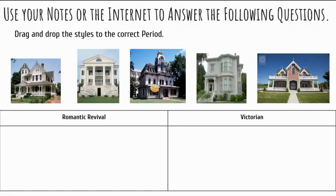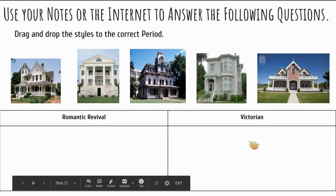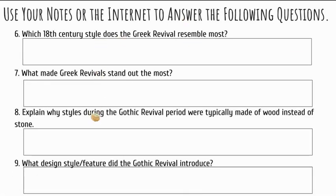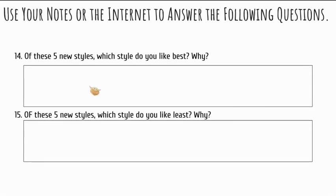For your assignment, just like you've seen before, use your notes and the internet to answer the following questions. You can drag and drop — it's an example of each of the five styles we just went over, and you're going to tell me whether it goes to the Romantic Revival or Victorian period, then answer the questions like you normally have. When you're done, make sure you hit submit. With Google Slides, you have to exit out of the slide itself and then go to the assignments page on Classroom to hit submit. If you can't remember how or think it won't save, you can email me saying you've completed your assignment and I'll go take a look and grade it. If you have any questions, feel free to email me or jump onto the live session happening later this week.